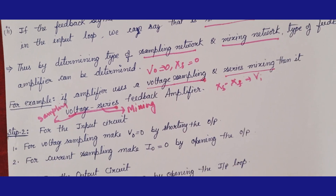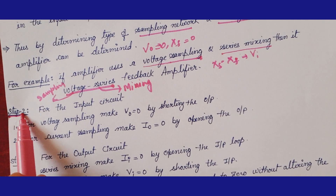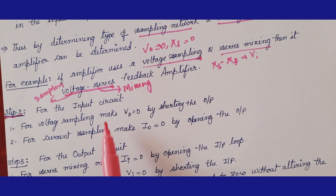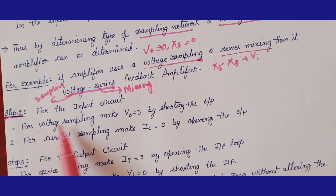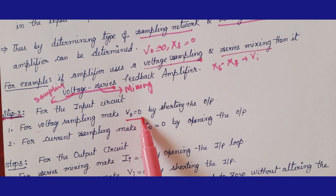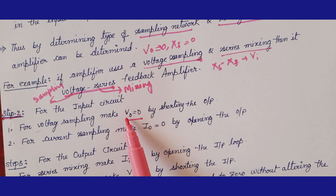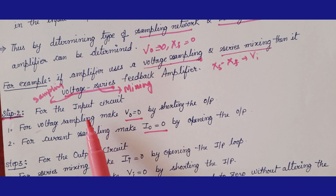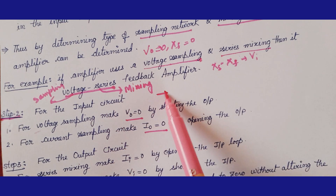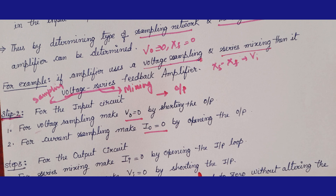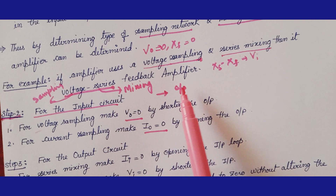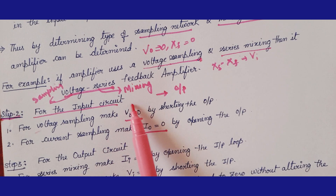The first step is to identify the topology. For the second step — the input circuit — you need to go to the output side of the circuit and make the following arrangements. For voltage sampling, make V_out = 0 by short-circuiting the output. For current sampling, make I_out = 0 by open-circuiting the output loop.